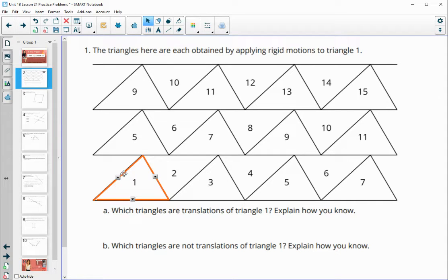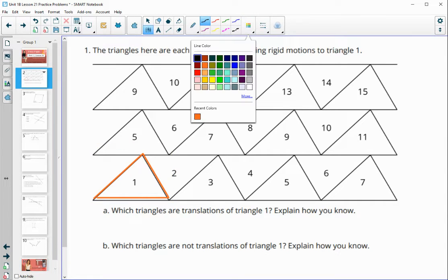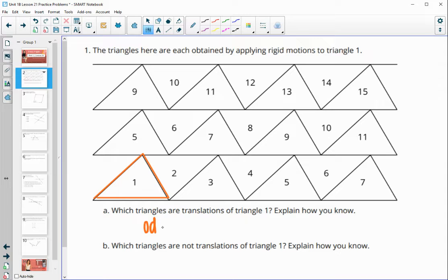So part A says which triangles are translations? And remember, translations is you just move it over. So we can see that three, five, seven, all of these odd ones are translations. We don't rotate the triangle at all. So all of the odd numbered triangles are translations.